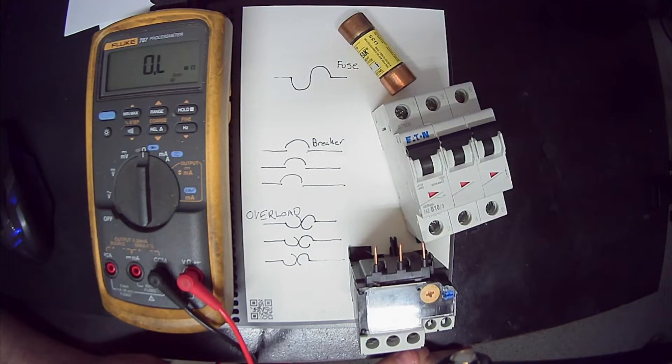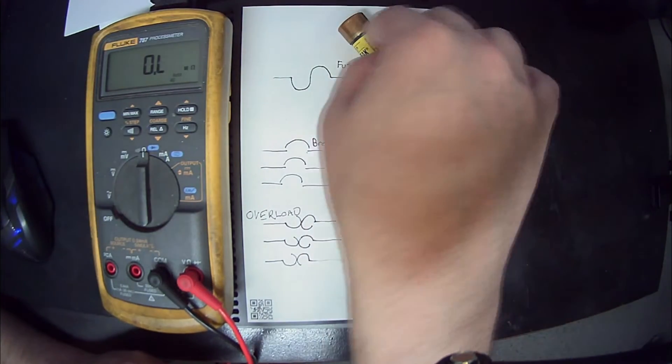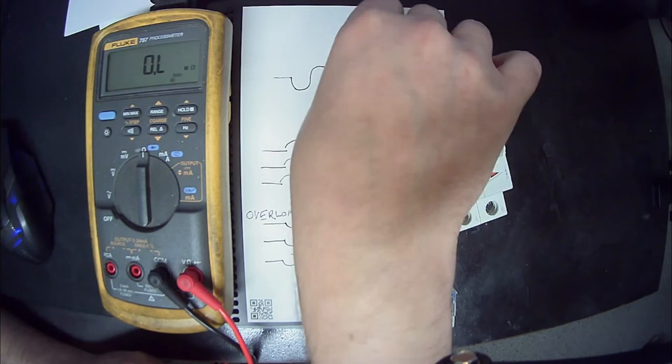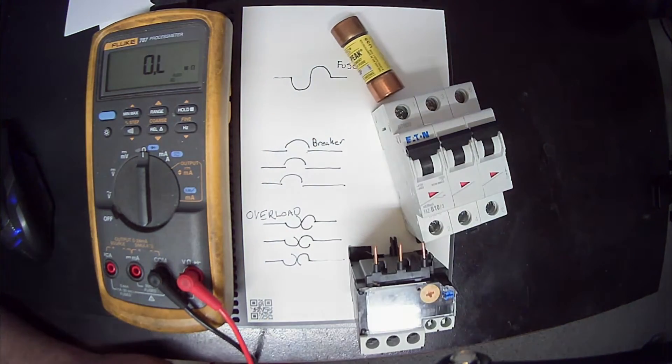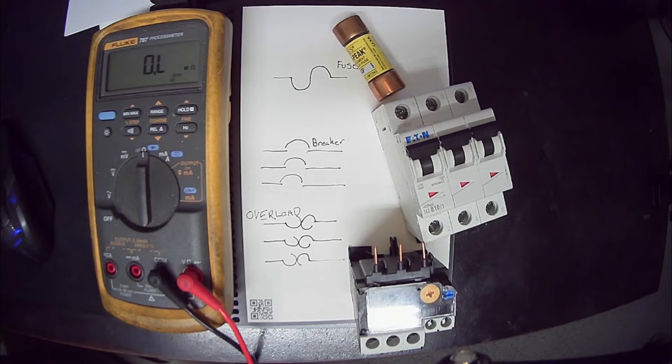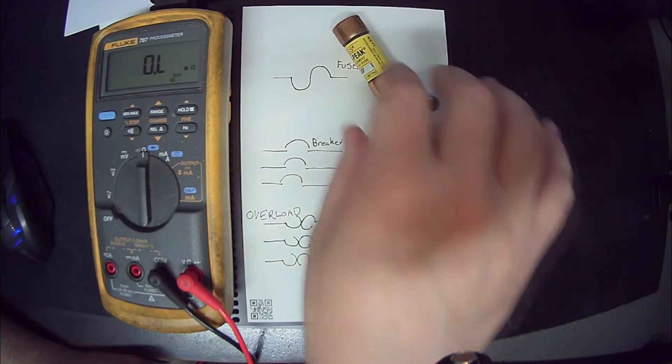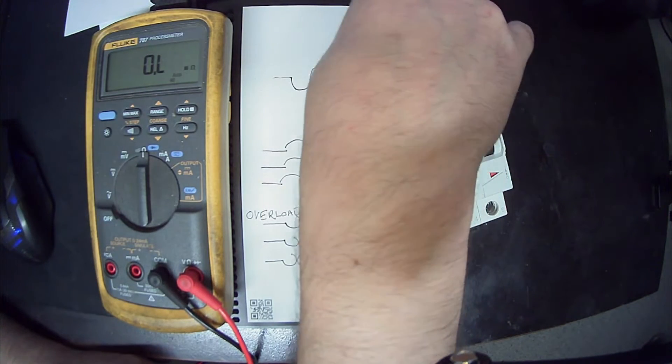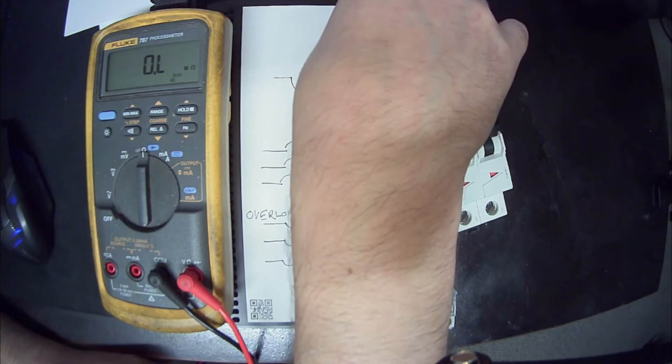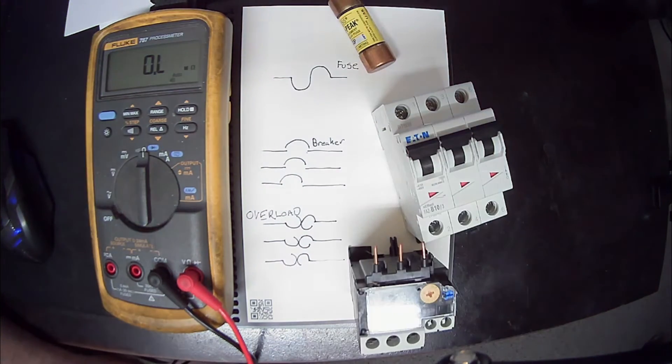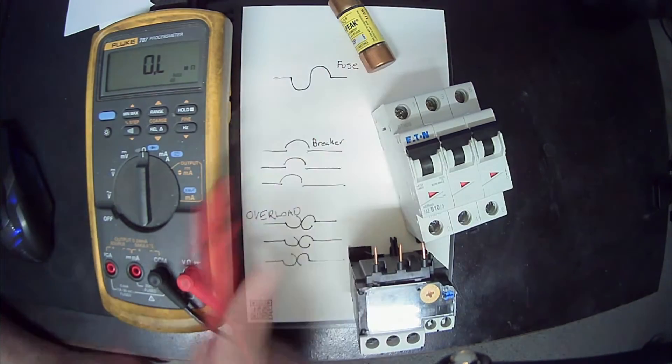Breakers can be designed to be fast or slow, and fuses can also be designed to be fast or slow. Wherever I can, I do prefer to use breakers just because things happen, things get overloaded, and replacing fuses can get expensive and breakers can be reset. So that's my preference, but not in all cases can that be done.